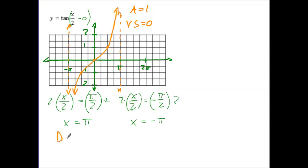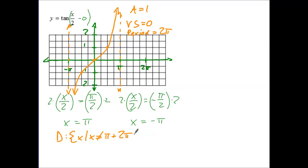What is our domain? x such that x cannot be equal to pi. Looking at our two asymptotes, there is a distance of 2 pi between them, which means the next asymptote comes 2 pi further to the right and 2 pi to the left. That also means our period is 2 pi, bringing a new asymptote every 2 pi multiplied by integer k. The range, as always, is all real numbers.